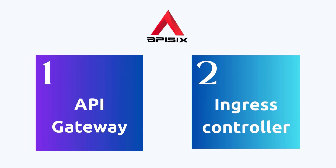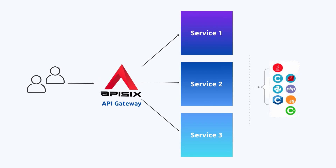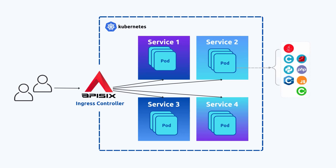Apache APISIX can be used as an API gateway and ingress controller. As an API gateway, it serves as a central point for routing all incoming requests to their intended destinations and manages the traffic to your services. The APISIX ingress controller is a Kubernetes ingress controller using Apache APISIX along with all built-in plugins, and supports native Kubernetes ingress resources. You can also extend Apache APISIX as a service mesh sidecar.